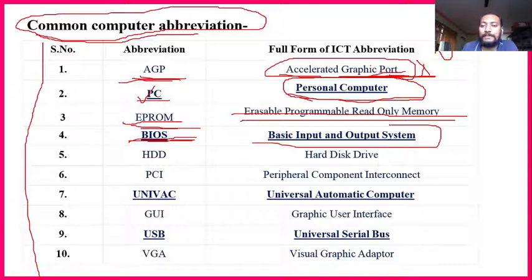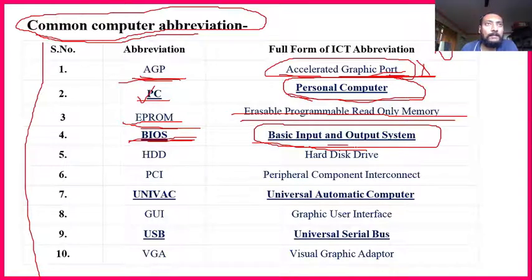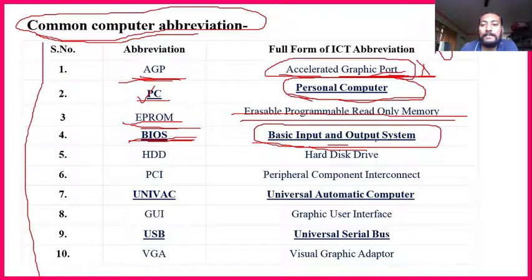BIOS — Basic Input and Output System. For example, a camera is an output device; under that camera, whichever software or system is working — that is called the BIOS. So BIOS is very, very important: Basic Input and Output System.